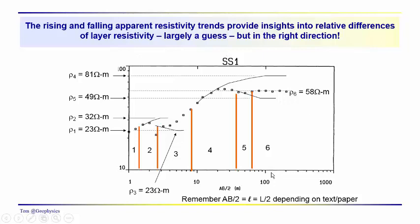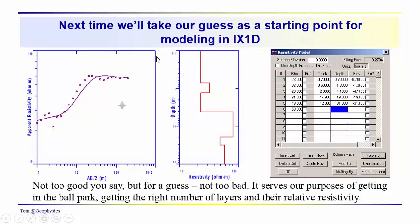So we have our resistivities, we have our depths, we're ready to put together a starting model. Next time we'll do that, but I just wanted to show you here, this is an IX-1D display. This is the data window over here, this is the model window over here. We've talked about this, how to interpret this. This is basically the shallower clays, the yellow and gray clays. This is probably just a tiny gravel.